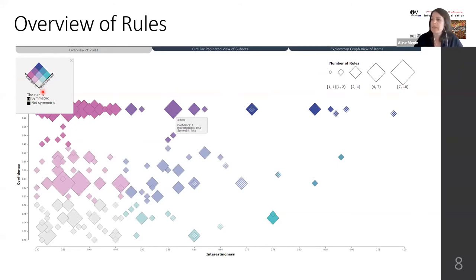Further, in this visualization, each diamond contains a context menu that allows the user to explore the subsets of data using the circular paginated view of subsets.